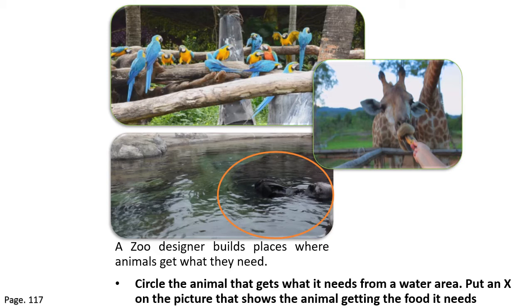Our next question is to put an X on the picture that shows the animal getting the food it needs. Which one of these animals is getting the food it needs? It is the giraffe. So, let's put an X on the giraffe picture. Well done.